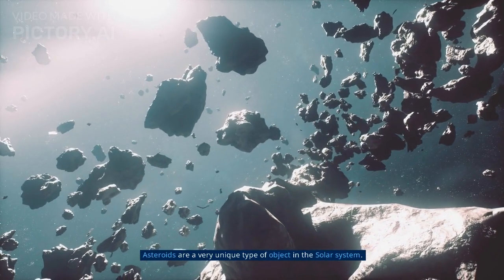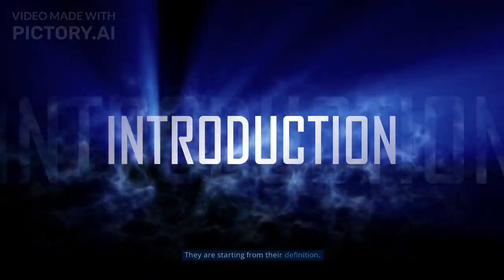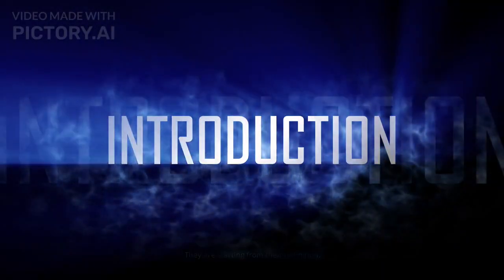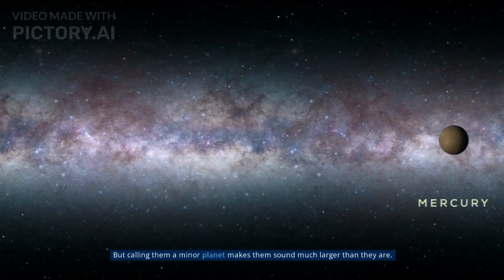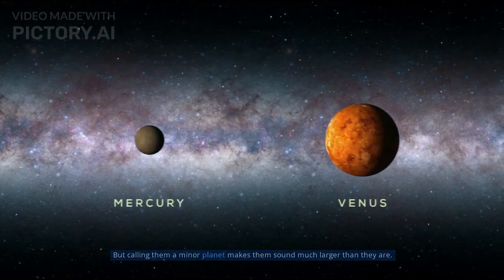Asteroids are a very unique type of object in the solar system. An asteroid is a type of minor planet that orbits around a star, but calling them a minor planet makes them sound much larger than they are.